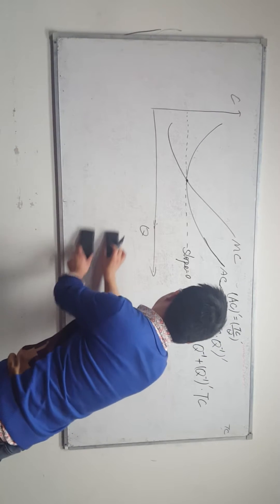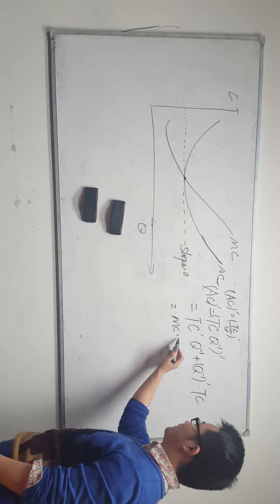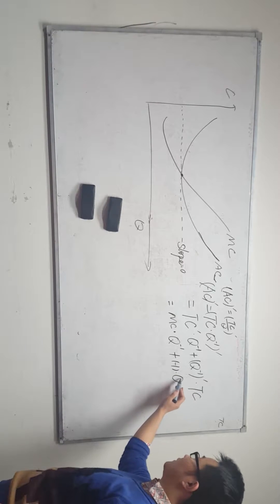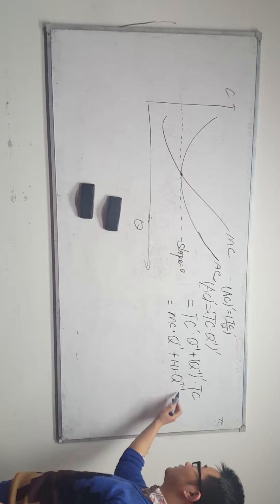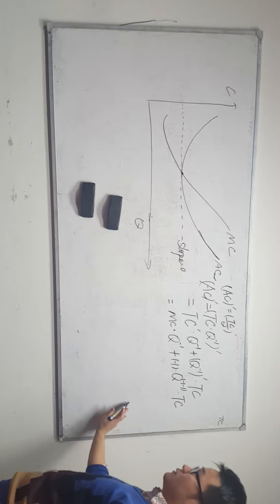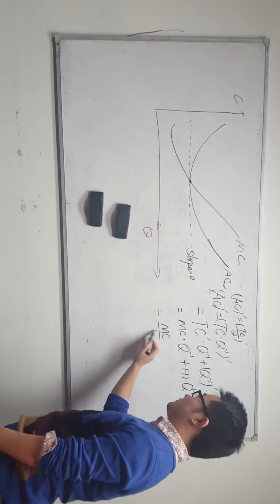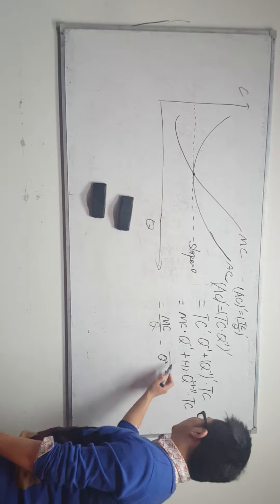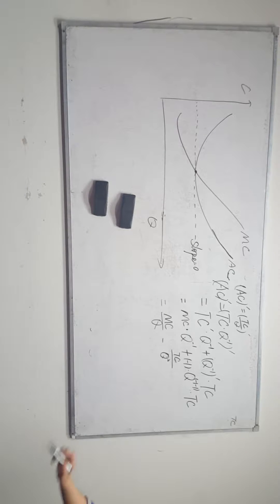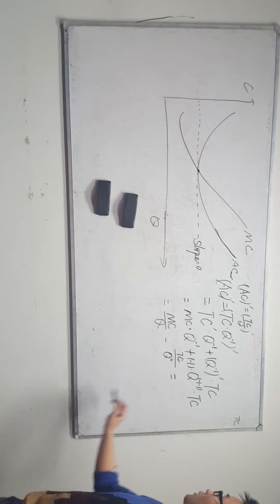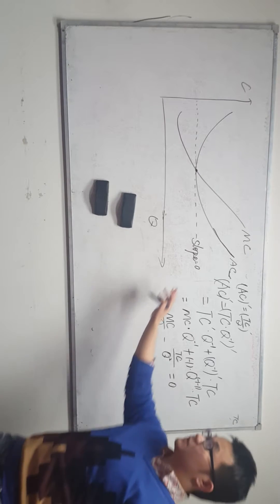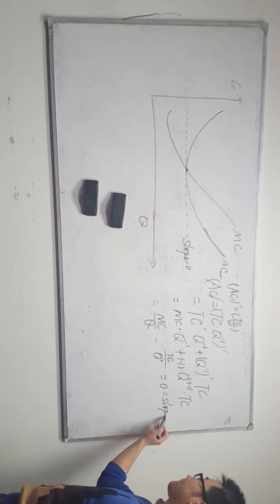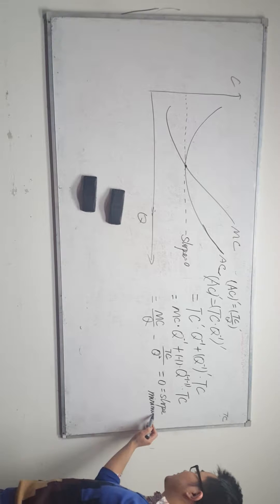Let's simplify. We have q to the power negative one, and applying the power rule gives q to the negative one minus one, multiplied by total cost. This simplifies to MC divided by q minus TC divided by q squared, which equals zero. At the minimum point, the first-order condition of average cost equals zero — that is the slope equals zero at the minimum point.